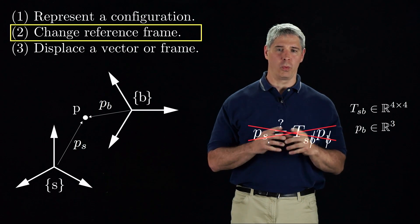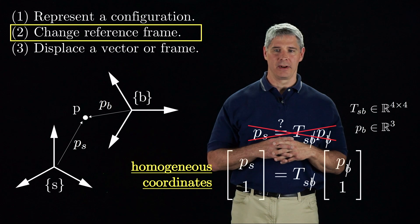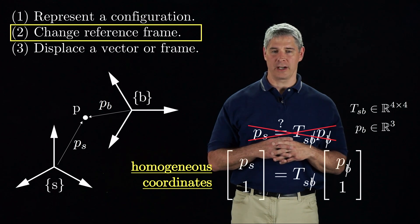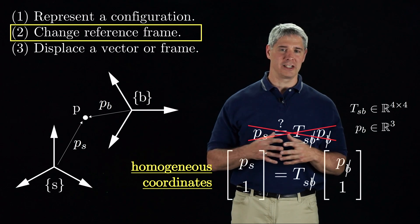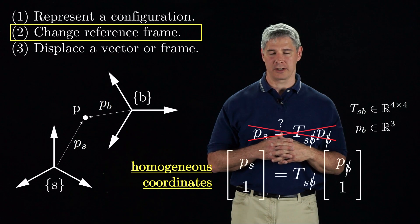To fix this, we simply append a 1 to the end of each vector, making the 3-vector into a 4-vector. This is called the homogeneous coordinate representation of the 3-vector.